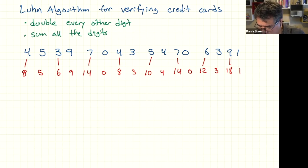So we get 8 plus 5 plus 6 plus 9 plus 1 plus 4. So you don't add in 14. You add in 1 plus 4 plus 0 plus 8 plus 3 plus 1 plus 0 plus 4 plus 1 plus 4 plus 0 plus 1 plus 2 plus 3 plus 1 plus 8 plus 1. And in this case, you should get 70.